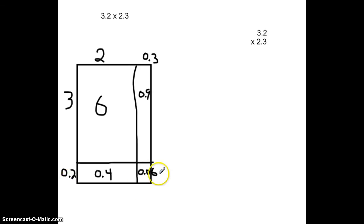We can add these numbers together, we get 6 plus 0.9 plus 0.4, 0.4 and 0.9 is 1.3, so that's going to be 7.3 plus 0.06, or we get 7.36.